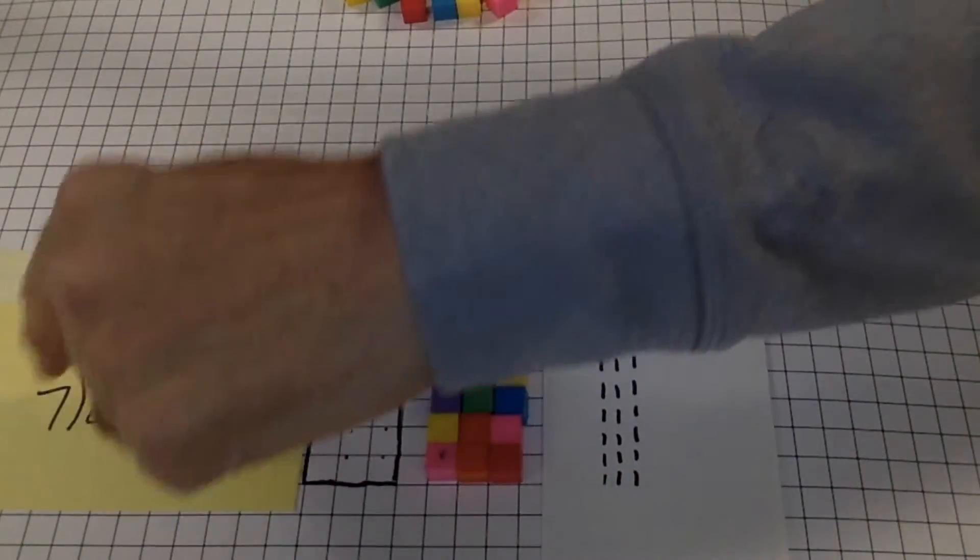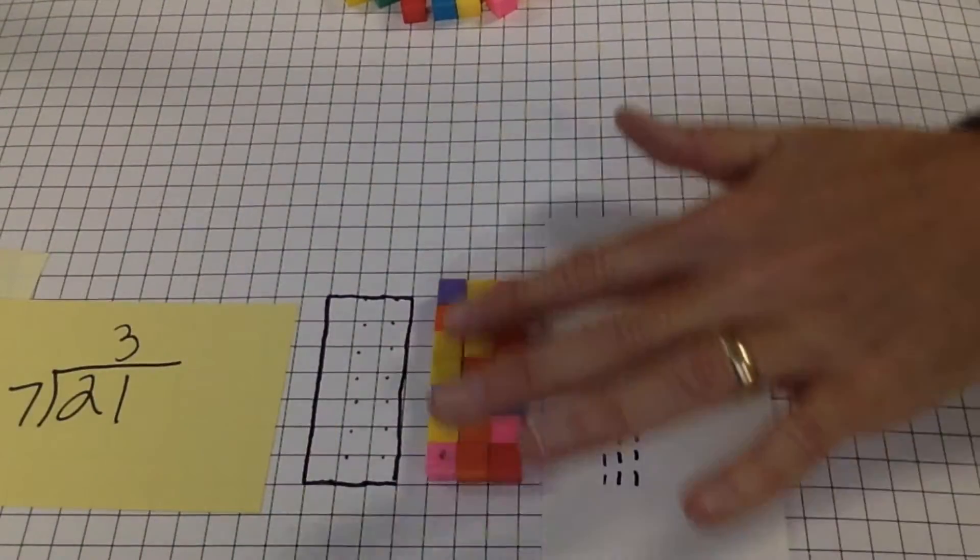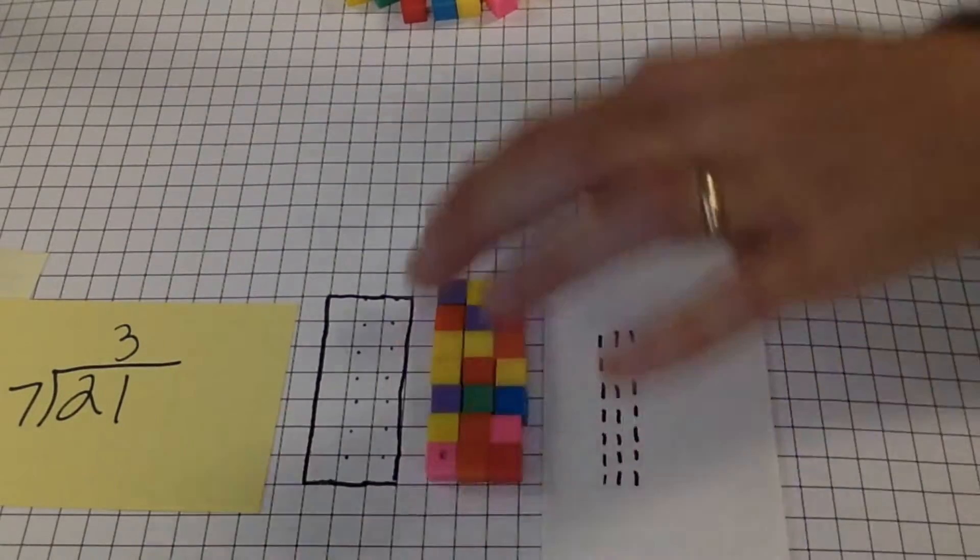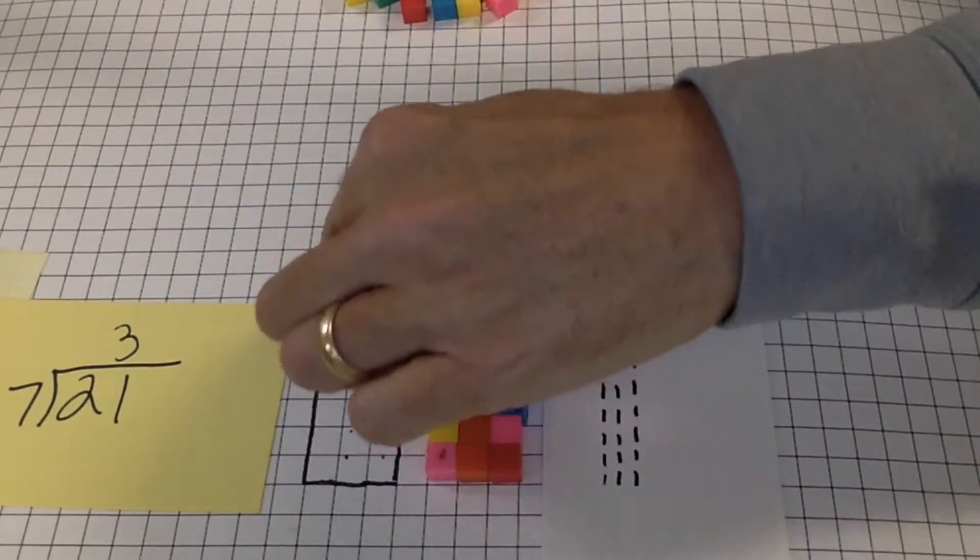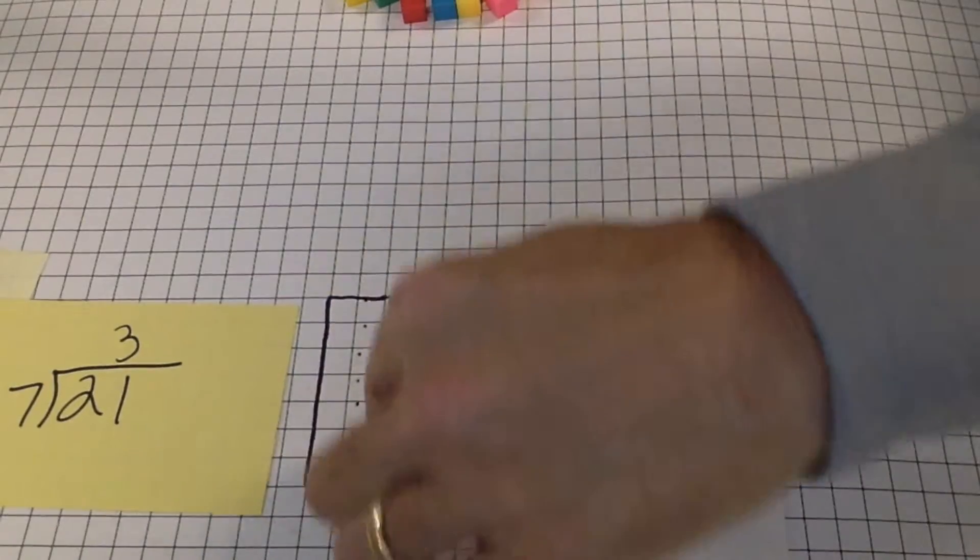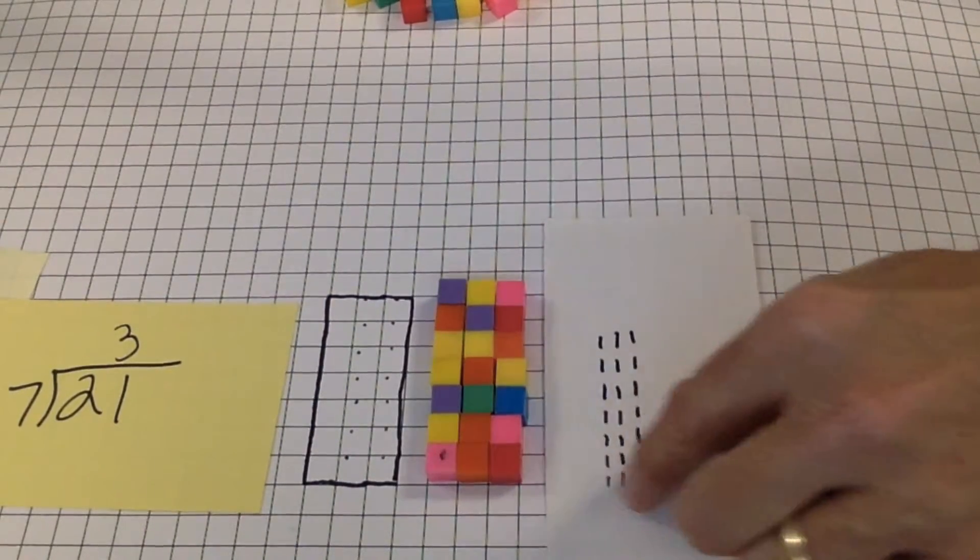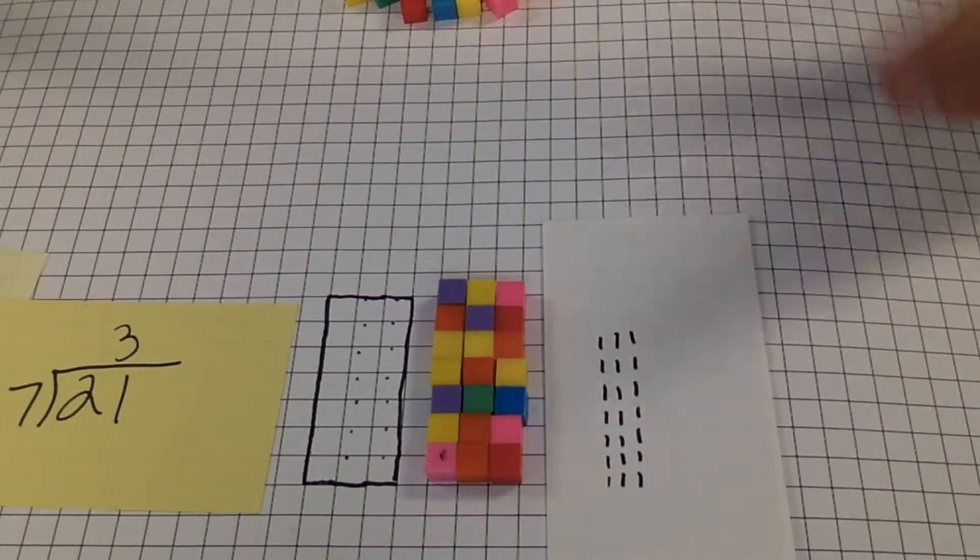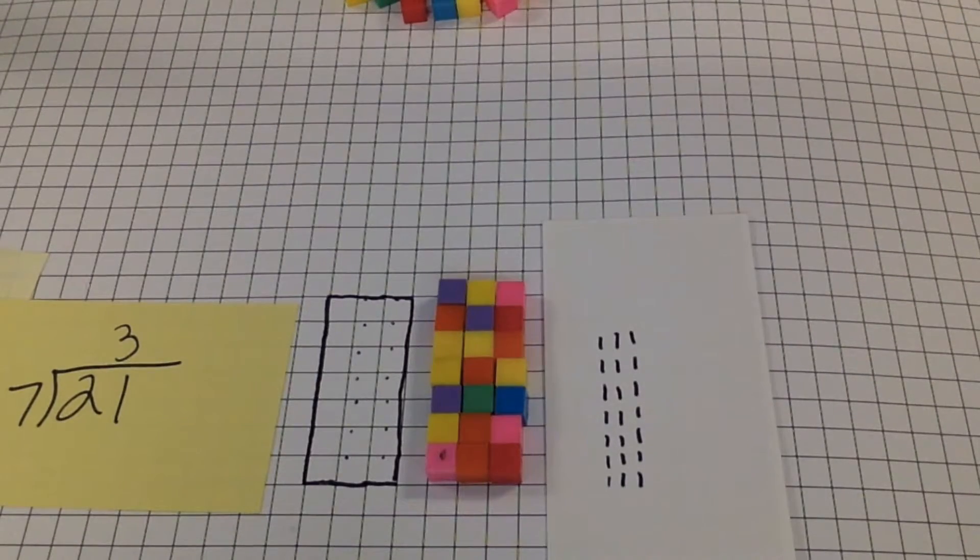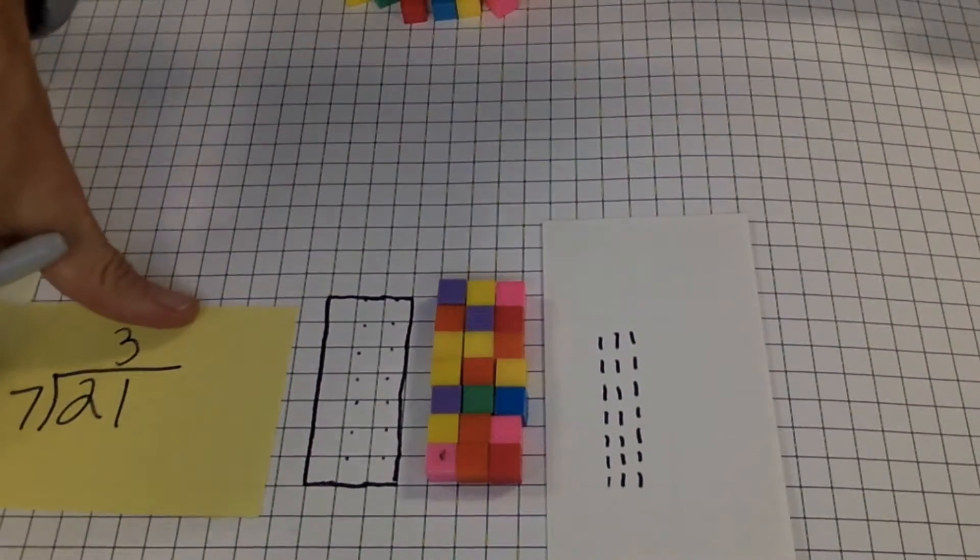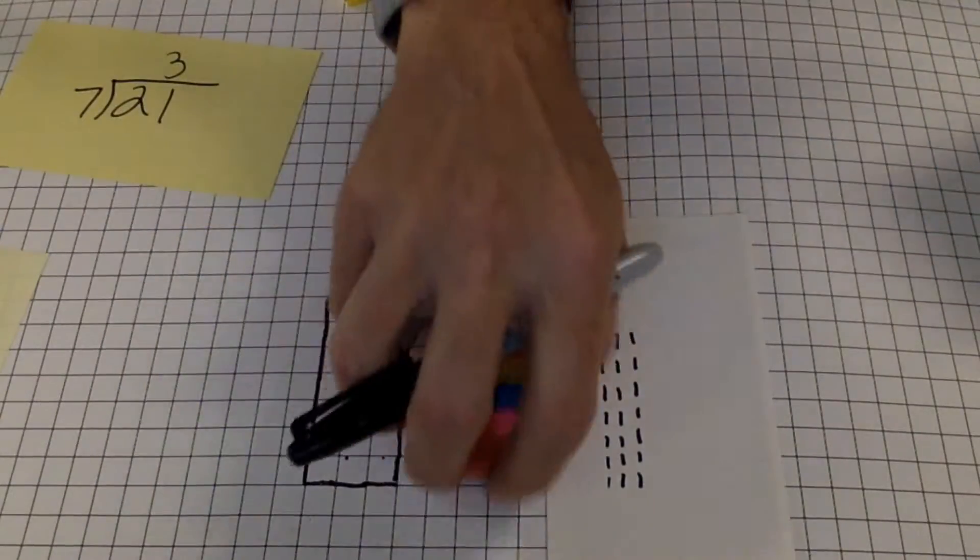Last time we divided 21 by 7 and we got 3. We put 21 cubes in rows of 7 and got 3 columns. We drew 21 squares in rows of 7 and got 3 columns. We drew 21 lines in rows of 7 and got 3 columns of lines. All three of those are good methods to solve that. But what happens if it's not going to give you an even answer? Let's take a look at a different one today.